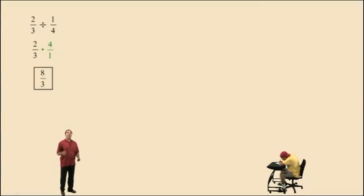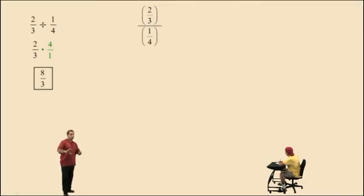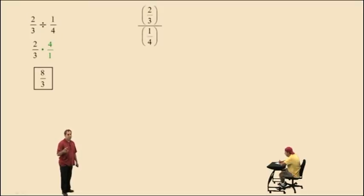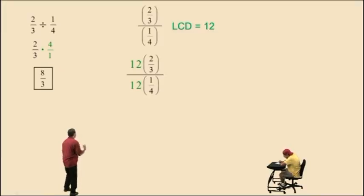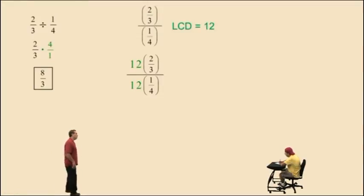Now let's do the same problem but use a different approach. Notice we have two-thirds divided by one-fourth, written in a form we call a complex fraction. A complex fraction has fractions in the numerator and can also have fractions in the denominator — it's like a fraction that has fractions. What we're going to do is clear these fractions, or kung fu them, using the lowest common denominator of both fractions. The smallest number that three and four divide evenly into is twelve. So we're going to multiply both the numerator and the denominator by twelve — this will clear those fractions because those denominators both divide evenly into twelve.